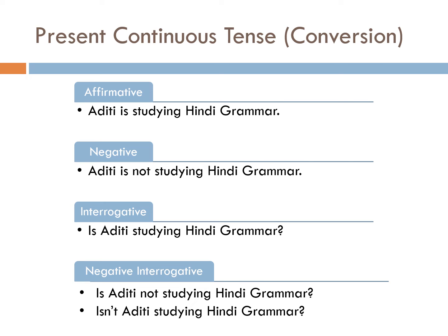So, Aditi is not studying Hindi grammar. Now, affirmative sentence को interrogative में convert करना है तो हम helping verb को sentence के beginning में ले जाते हैं और बाकी sentence same रहता है. For example: Is Aditi studying Hindi grammar? Rule: Is/am/are plus subject plus first form of verb plus -ing plus object. Negative interrogative rule: Is/am/are plus subject plus not plus first form of verb plus -ing plus object. So we get: Is Aditi not studying Hindi grammar? Or, Isn't Aditi studying Hindi grammar?